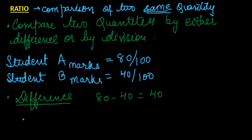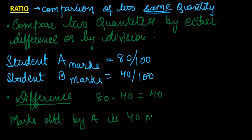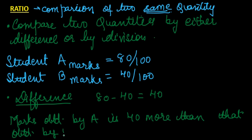Subtracting the smaller value from the bigger value: 80 minus 40 gives you 40. So we can say that marks obtained by A is 40 more than that obtained by B. This is one way of comparison of two quantities — by taking the difference of the values of the two quantities.